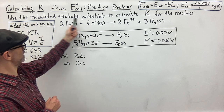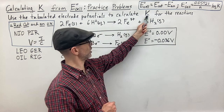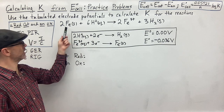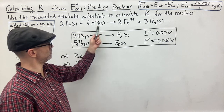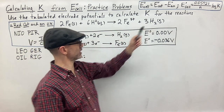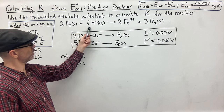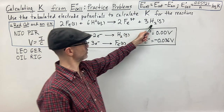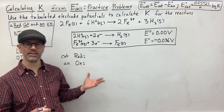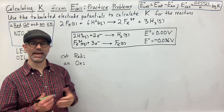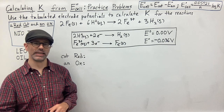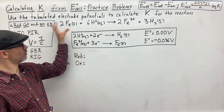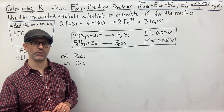They want us to use the tabulated electrode potentials to calculate the equilibrium constant of this reaction. This reaction is similar to a prior one where I had copper reacting with acidic solution to form copper two plus ions and hydrogen gas. This time we have iron metal being thrown into an acidic H⁺ solution, forming iron three plus and hydrogen gas. Last time with copper, the K value was very small, indicating the reaction was heavily weighted toward the reactant side — meaning copper is not very reactive to acidic solution.